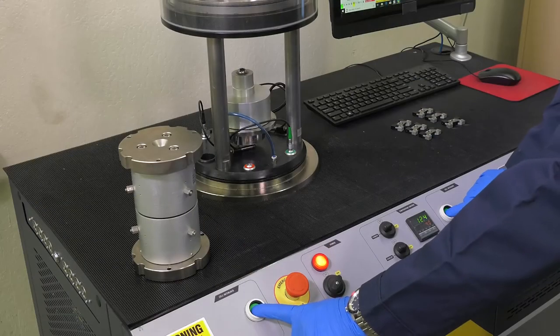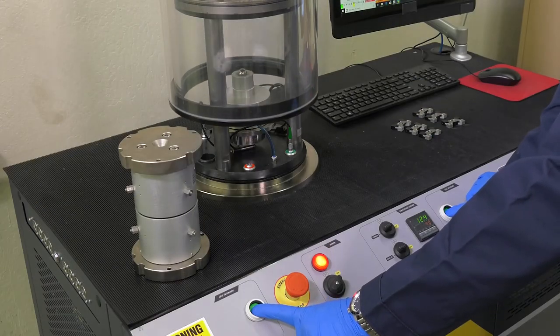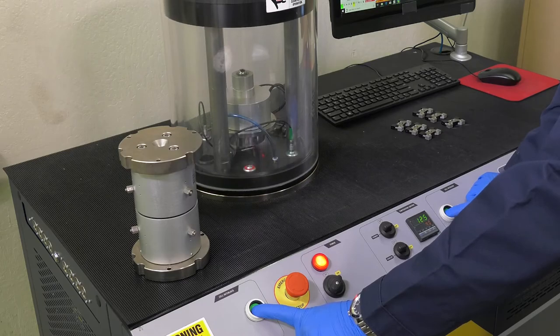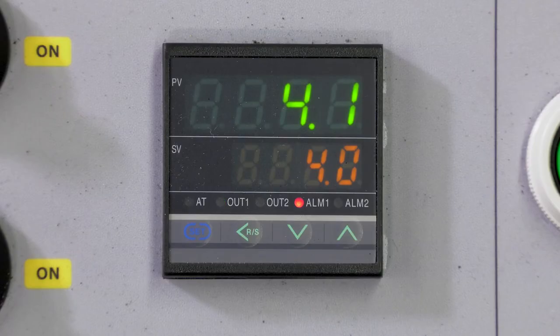Close the chamber and set the temperature control to the desired testing temperature. Allow the testing chamber to equilibrate for at least one hour at the testing temperature.